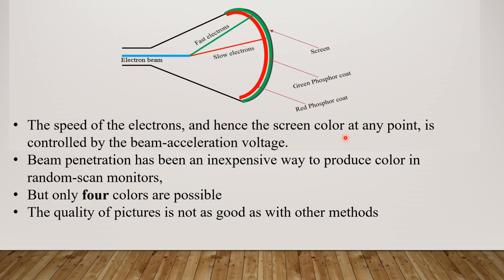The screen color at any point is controlled by the beam acceleration voltage. In CRT, the electron gun has two parts: a heated metal and a control grid. The control grid controls the voltage, which in turn controls the speed of the electrons and thus determines the screen color at any point.